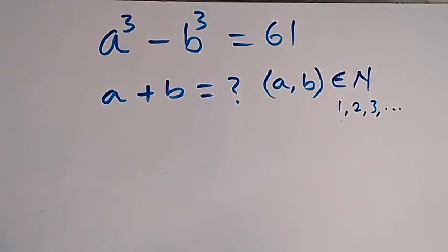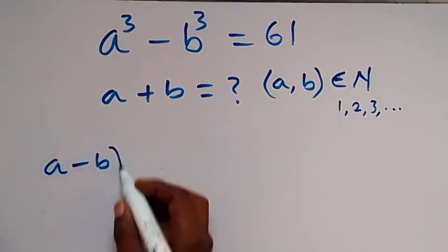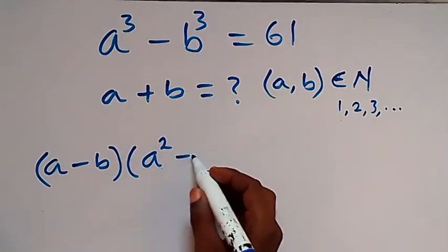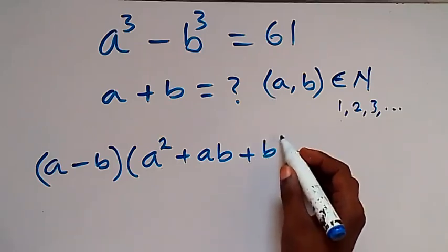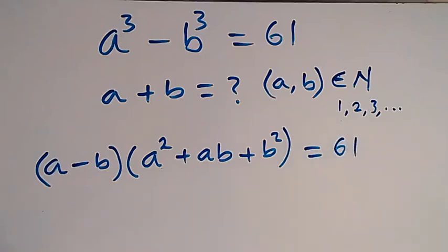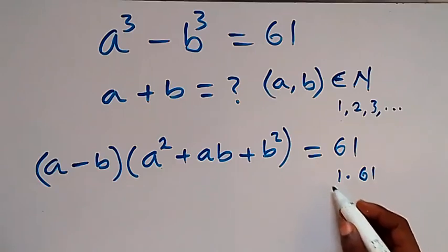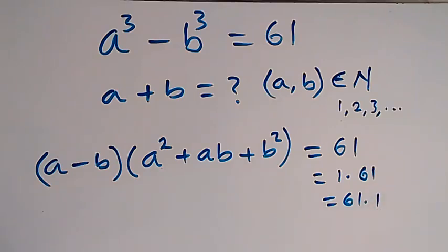From here we can write a³ - b³ as (a - b) multiplied by (a² + ab + b²), and it equals 61. Then we can separate 61 as 1 multiplied by 61, or also as 61 multiplied by 1.